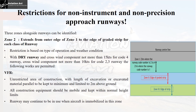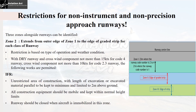The runway may continue to be in operation when an aircraft is immobilized in zone 2 under VFR. Keeping all the conditions the same, if there are IFR operations on that runway, there is unrestricted area of construction, but the level of excavated material parallel to the runway should be kept to a minimum and the height of excavated material should be kept to 2 meters above the ground. All construction equipment should be mobile and within normal height limits. The runway should be closed when an aircraft becomes immobilized in zone 2 during IFR operations.